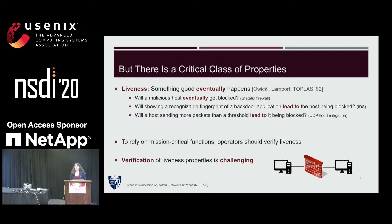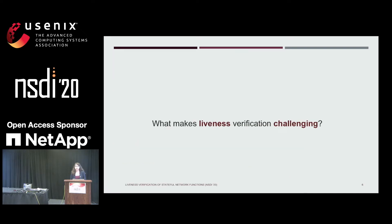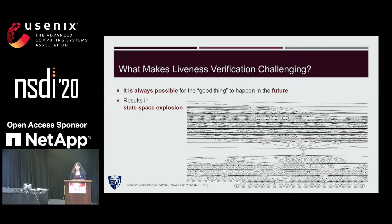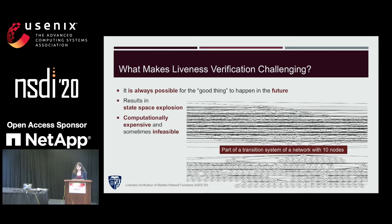To rely on these mission-critical functions, operators need to verify liveness properties as well. But verification of liveness properties is challenging. Intuitively, verifying liveness is challenging because it is always possible for the good thing to happen in the future. Liveness properties reason about progress and concern the succession of events in dynamic systems, so they cannot be verified on a static snapshot. To verify dynamic systems, we model them as transition systems, but for stateful network functions, this approach may result in state space explosion — it is computationally expensive and sometimes even impossible. The figure shown is only part of a transition system for a network of just 10 nodes.